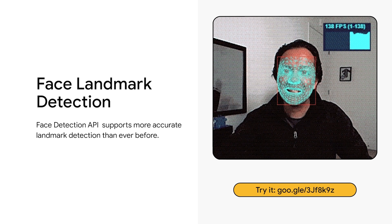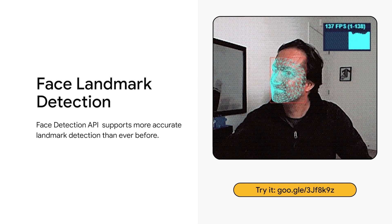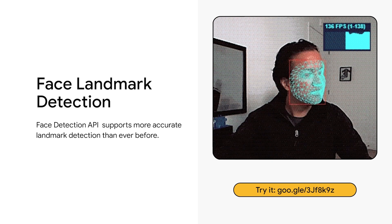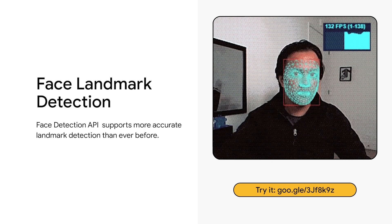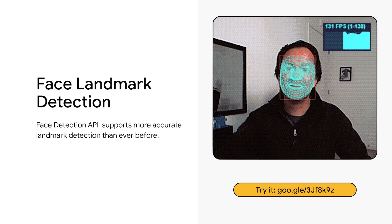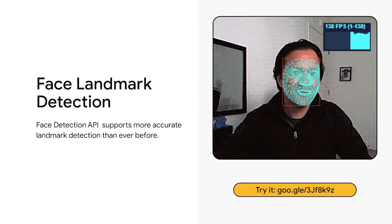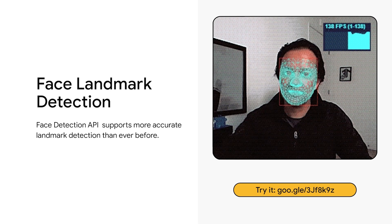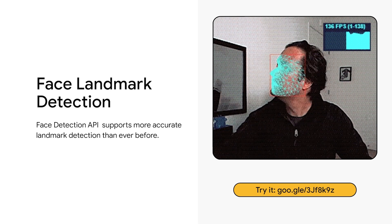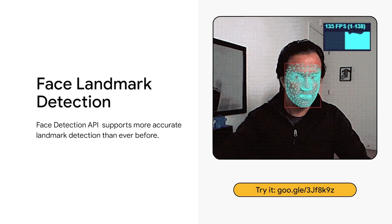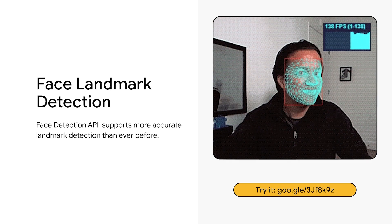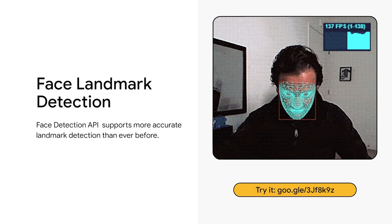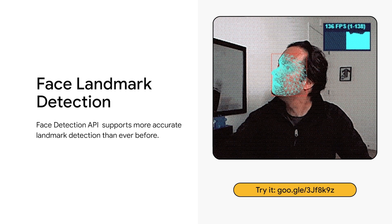Moving to the face, we're also updating our face landmark detection API that builds upon the existing face mesh model. This new API has even higher accuracy and detail for face landmark movements and is based on the latest MediaPipe model developed in alignment with Google's AI principles. As you can see from the demo shown, it can run at over 130 frames per second in the desktop browser on a modern computer. Furthermore, this API now supports a lightweight option that just returns bounding boxes and 6 key points of the face for faster performance on less powerful devices.